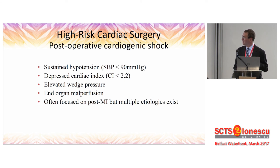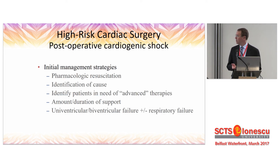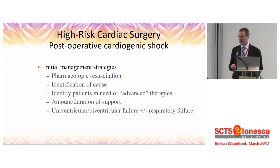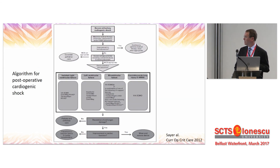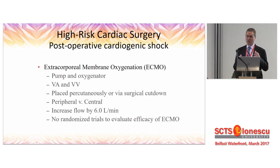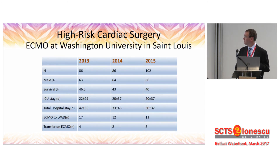So what if the ventricle still doesn't work? For example, sustained hypotension, depressed cardiac index, elevated wedge, and end-organ malperfusion — we need to identify these patients and start pharmacologic resuscitation, try to find the cause, whether it's air or inadequate protection. We need to identify patients who might need advanced therapies, and ideally if we don't have an MCS program, we need to consider either early transfer or maybe not doing those cases. Impella, Tandem Heart — we're going to hear more about those in the next talks. We have favored ECMO in patients we can't get off pump initially as our first line of attack, and with an early aggressive approach we can save about 40% of these patients.